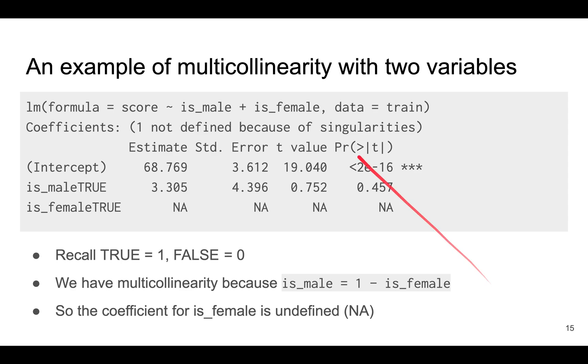If you estimate a model in R and there's a problem of multicollinearity, you see that the coefficients become NA for one of the extra variables. In this case, you're either male or you are female.